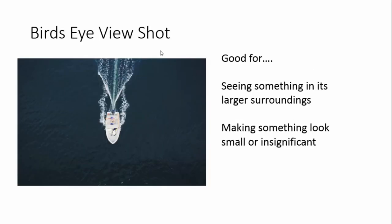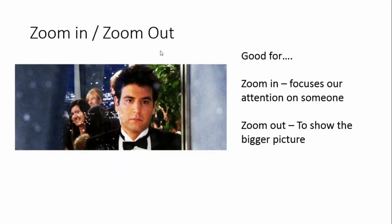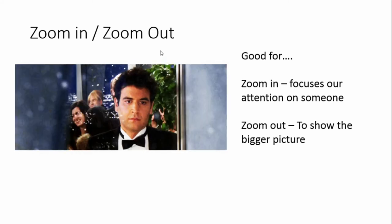A bird's eye view shot is a bit like an extreme high angle — your camera is up very high but rather than looking slightly down at an angle, you're looking directly down as though you are a bird flying overhead. This can be used for seeing something in its larger surroundings, such as a person walking in a city. It can also make something look small or insignificant — a boat seen from this high above seems tiny compared to the large amount of water around it.